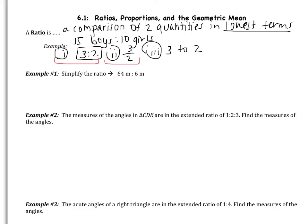In example 1, it says simplify the ratio 64 meters to 6 meters. Well, ratios never have units, so we don't need those. So we have 64 to 6. What can I divide both 64 and 6 by? Well, I can divide them both by 2, because they're both even. This gives me 32 to 3.